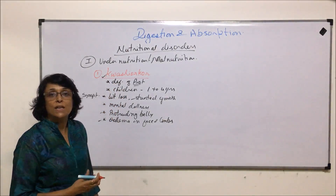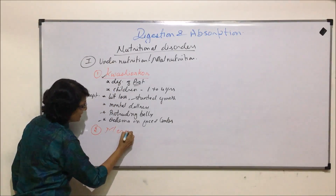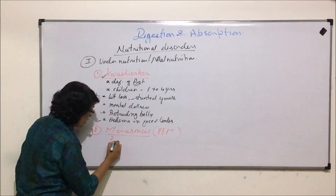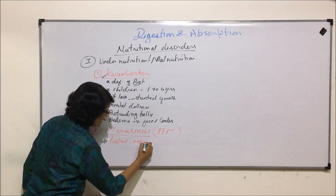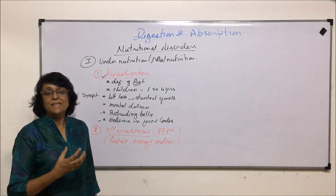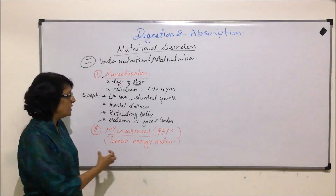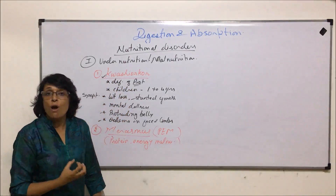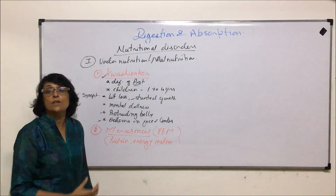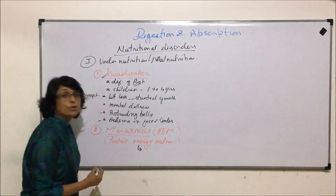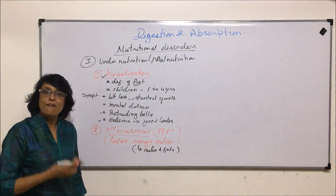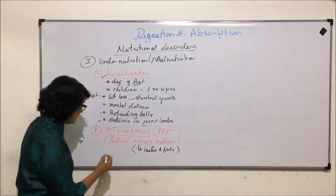A similar disorder but due to another deficiency is called PEM — protein-energy malnutrition — and the disorder is known as marasmus. PEM stands for protein-energy malnutrition. Protein is the building block; all cells and bones require protein for formation. In kwashiorkor it was only protein deficiency, but in marasmus, protein is also less and energy-giving substances — fats and carbohydrates — are also less. So it is a protein, carbohydrate, and fat deficiency.